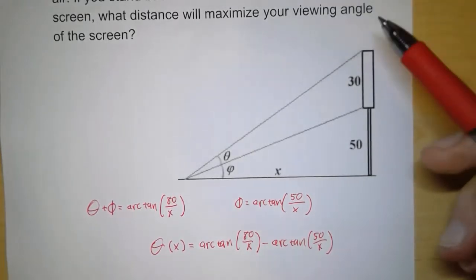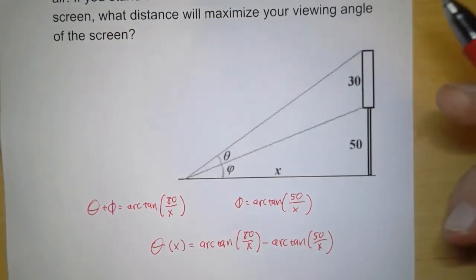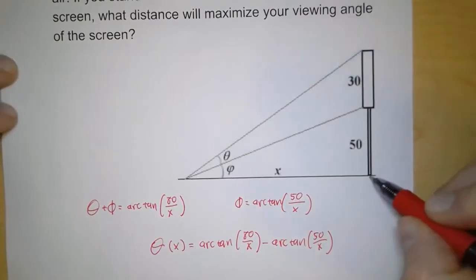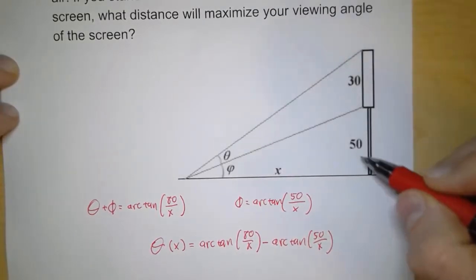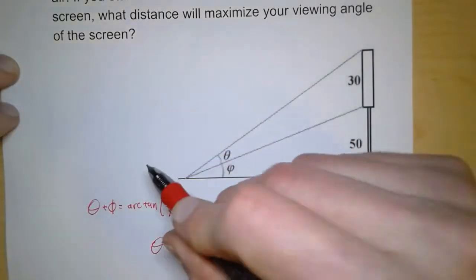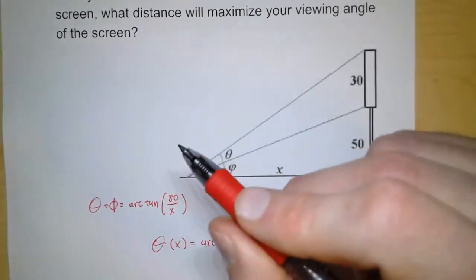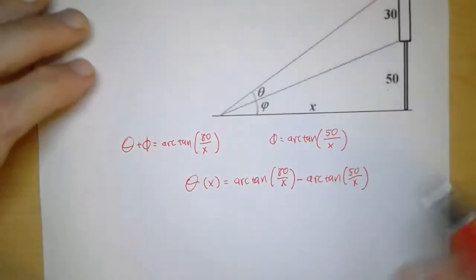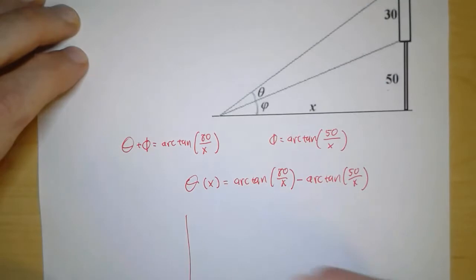And so we want to know what distance will maximize your viewing angle of the screen. Well, if you stand real close, you're not going to have a good angle. But if you stand too far away, then that won't be good either. So the idea is that our graph should probably do something like that.